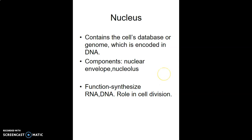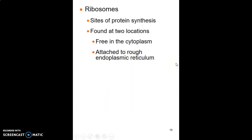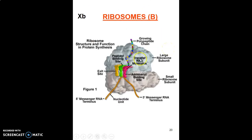The ribosomes are the site for protein synthesis and are found in two locations: free in the cytoplasm, or attached to the endoplasmic reticulum, making it the rough endoplasmic reticulum. What happens in ribosomes is mainly translation — the protein transcribed from DNA comes to the ribosome for translation, where a polypeptide chain is assembled from messenger RNA.